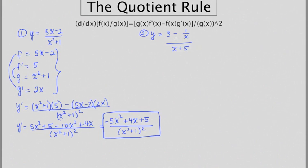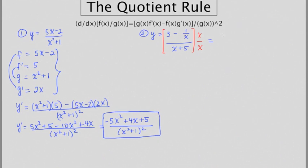In our second example, they give us a complex fraction, and the best bet is to get rid of the complexity from the start. I'm going to partition the whole problem and multiply by a useful form of 1, which in this case is going to be x over x. This allows me to rewrite the function as 3x minus 1 over x squared plus 5x.